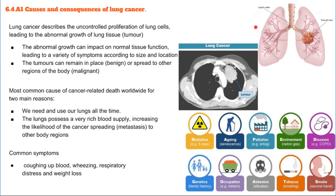Our lungs are working all the time — we go through about 10,000 liters of air every single day — so anything that enters our lungs can potentially cause harm or damage. Lung cancer is one such condition: it is an uncontrolled proliferation of lung cells that gives rise to a tumor. Any tumor that forms can impact the alveoli depending on where it develops. Tumors can be malignant — cancerous and able to spread to other regions — or benign, meaning they stay in place and don't cause widespread damage.